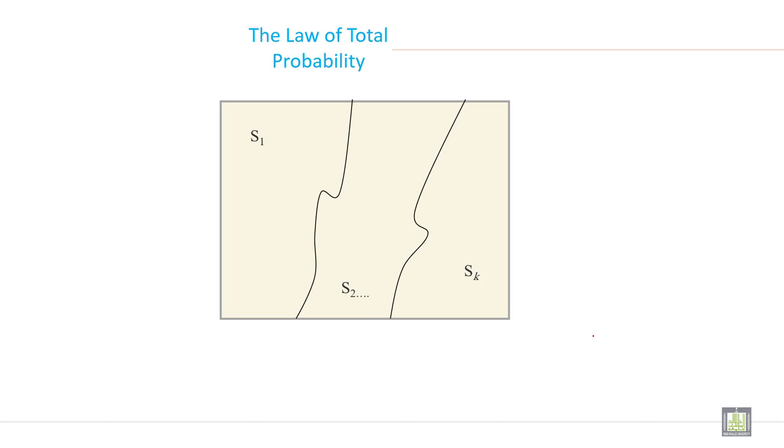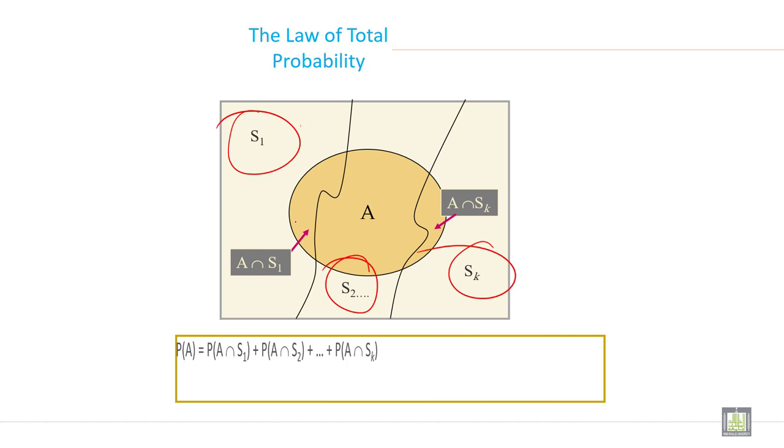In the law of total probability, this is the sample space S1, sample space S2, and sample space SK. This is event A. A intersection S1 is this, A intersection SK is this. And probability of A can be calculated using this formula.